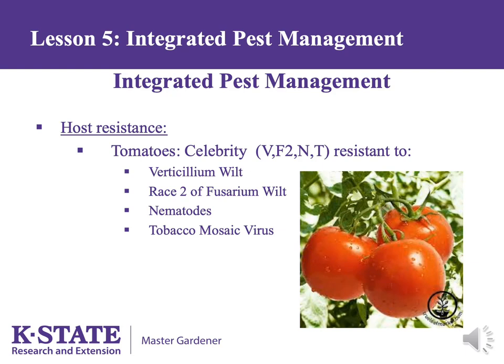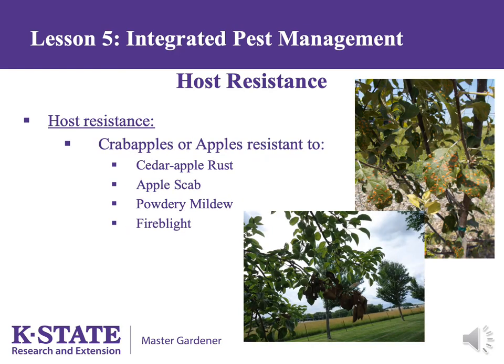Some older heirloom varieties of tomato may not have resistance to any of these pests and may be more challenging to grow. In some cases, you would never choose a variety that did not have a specific type of resistance — for example, never purchasing a crab apple that wasn't resistant to cedar apple rust, since it is so common in Kansas. Other important diseases include apple scab, powdery mildew, and fire blight, and some varieties carry resistance to all four.